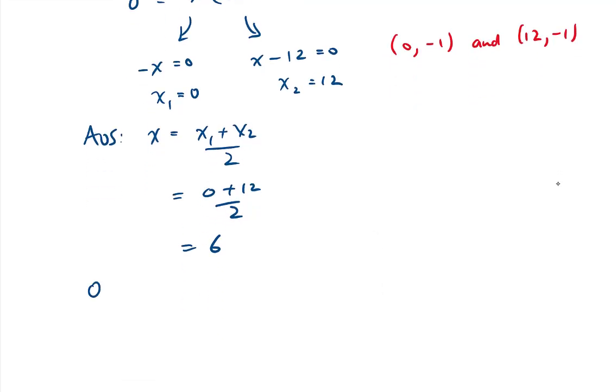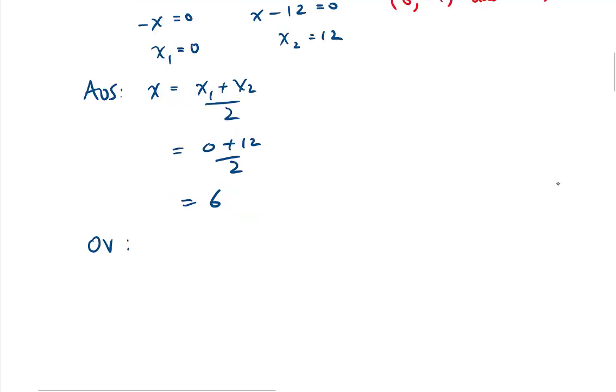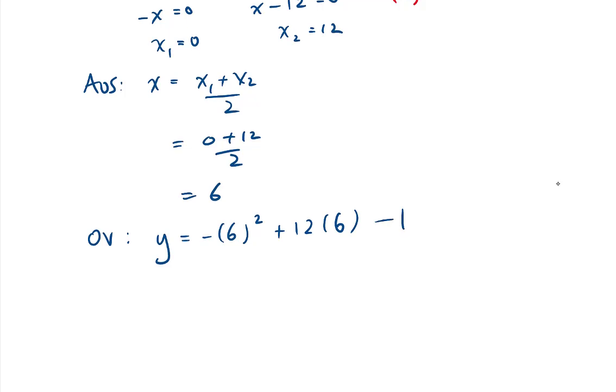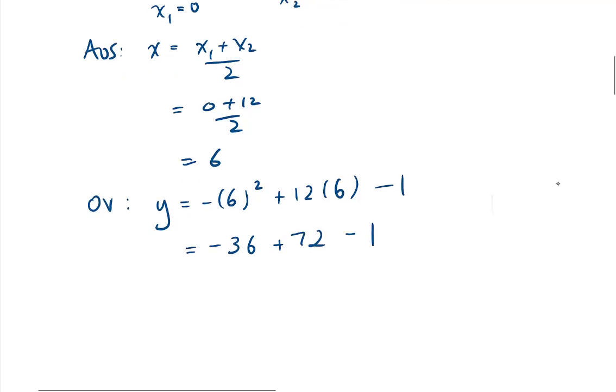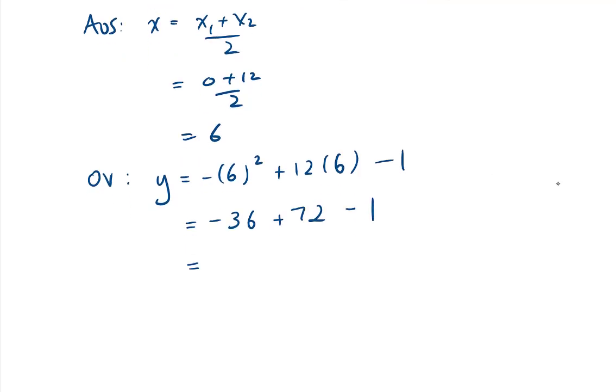So we can find our optimal value. It's going to give us y equals negative 6 squared plus 12 times 6 minus 1, which gives us negative 36 plus 72 minus 1, which tells us our optimal value is at 35.